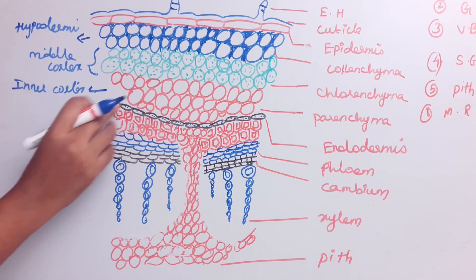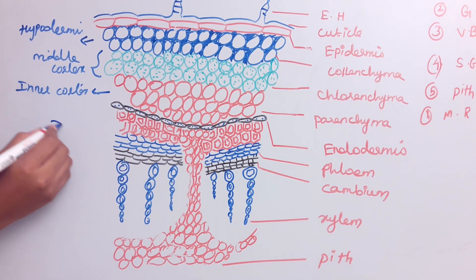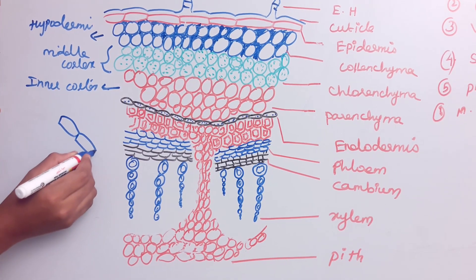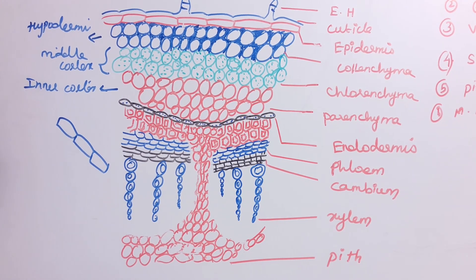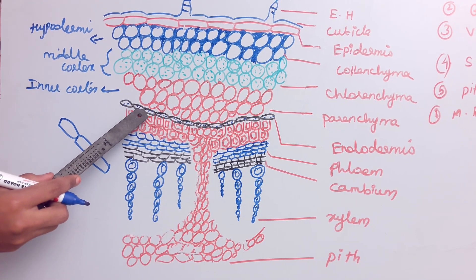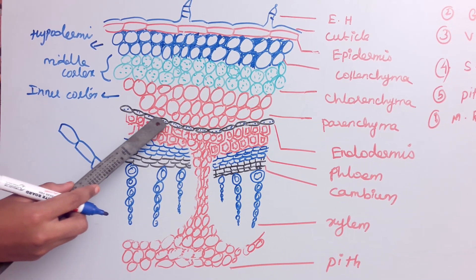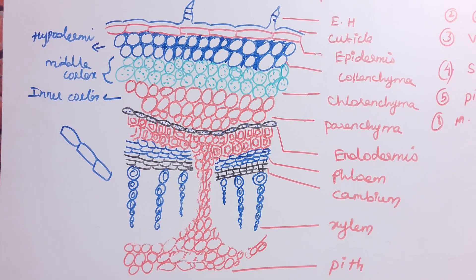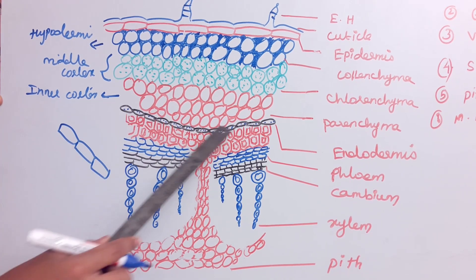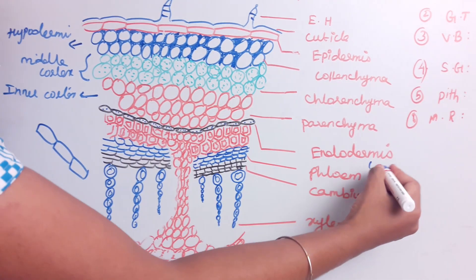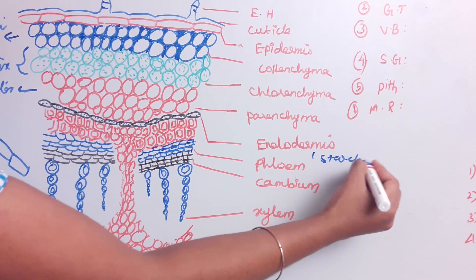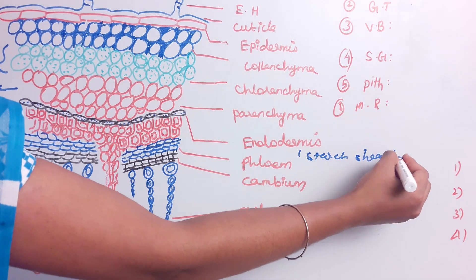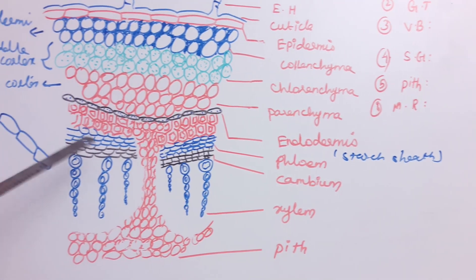Below the cortex is the endodermis. The endodermis is a single layer of barrel-shaped cells. Inside the barrel-shaped cells there are starch grains, which is why it is also called the starch sheath.